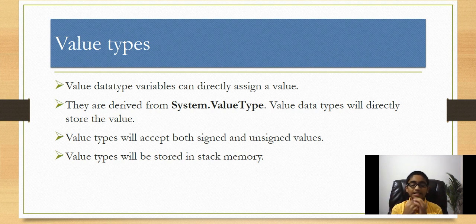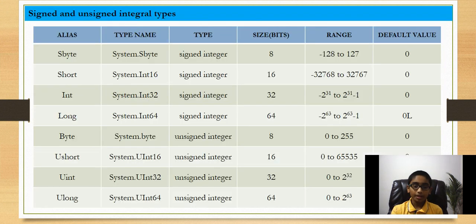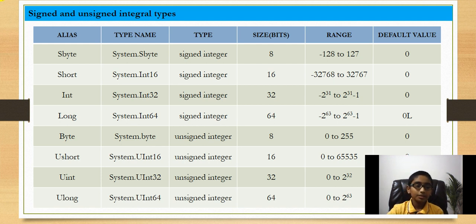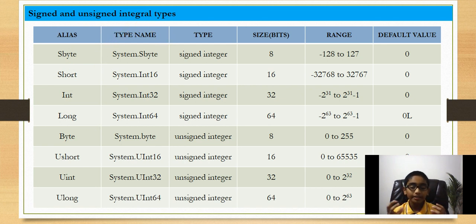Value types will be stored in stack memory, not like reference types which will be stored in heap memory. If you want to learn about stack memory and heap memory, don't worry — I'll do a video on that too. Next we're going to talk about signed and unsigned integral types. Integral type means it stores some numeric values.